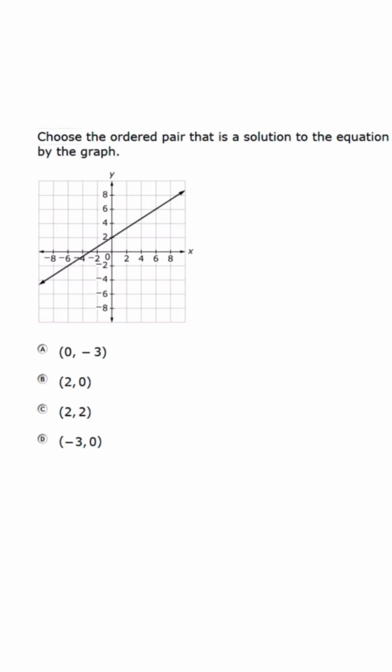They want us to determine if the ordered pair is the solution, and we're basically just looking to see if these points fall on the line.